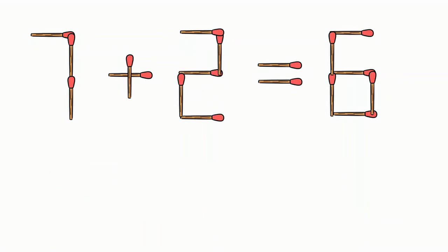And finally we take the one on the right hand side, move it up here to make a nine. Seven plus two is equal to nine.